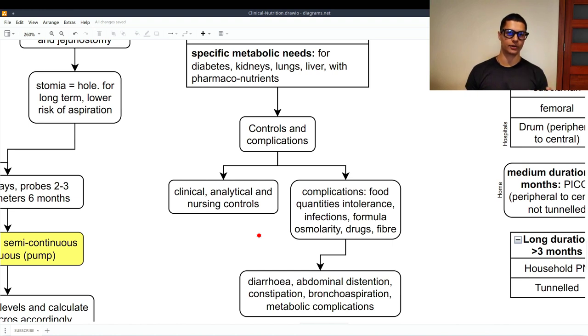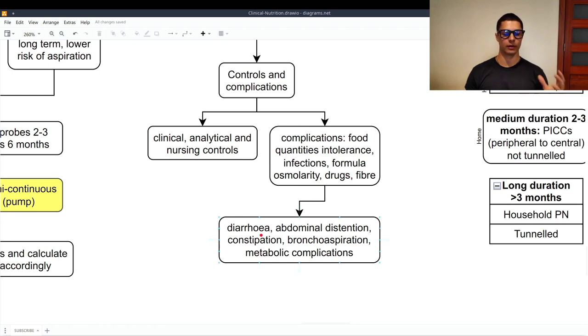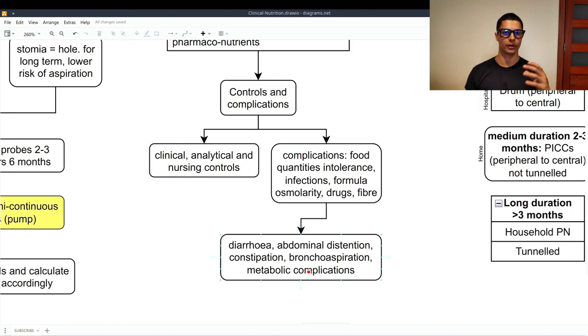Of course, administrating a formula is not easy. So, therefore, we have to get some controls to avoid the complications. The controls are clinical, analytical, and nursing controls. And the complications are maybe food quantities intolerance, it is too much, or maybe there are some infections, the formula's osmolarity is too high, therefore, they may develop kidney problems in the future, interactions with drugs, and also, maybe there is too much fiber. And all these complications may lead to diarrhea, abdominal distension, constipation, bronchoaspiration, and also other metabolic complications.